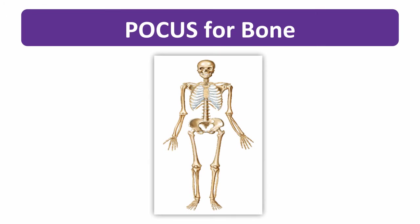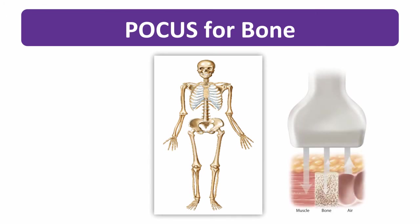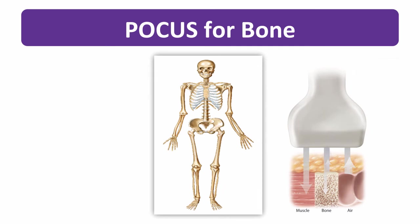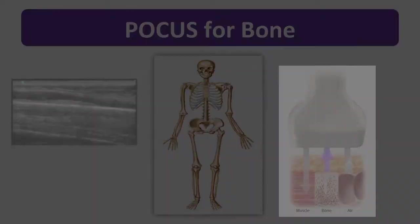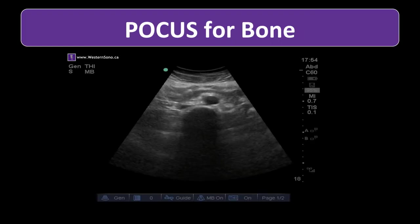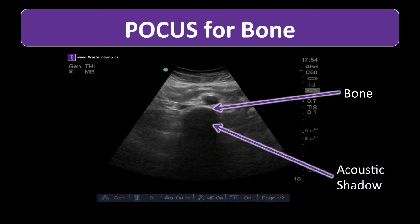Bone is highly reflective to ultrasound waves — or in ultrasound lingo, has a high attenuation coefficient — meaning most of the ultrasound energy is reflected back to the transducer, creating a bright echogenic line on screen when the transducer is perpendicular to a bony surface. This is the same principle behind the dark acoustic shadow we see behind bony structures.